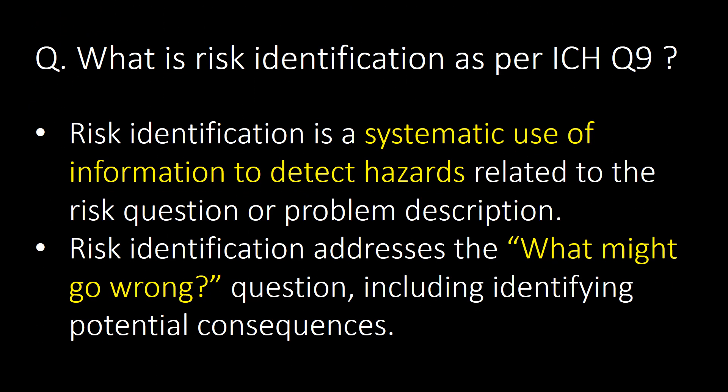What is risk identification as per ICH Q9? Risk identification is a systematic use of information to detect hazards related to the risk question or problem description. Risk identification addresses the 'what might go wrong' question, including identifying potential consequences.